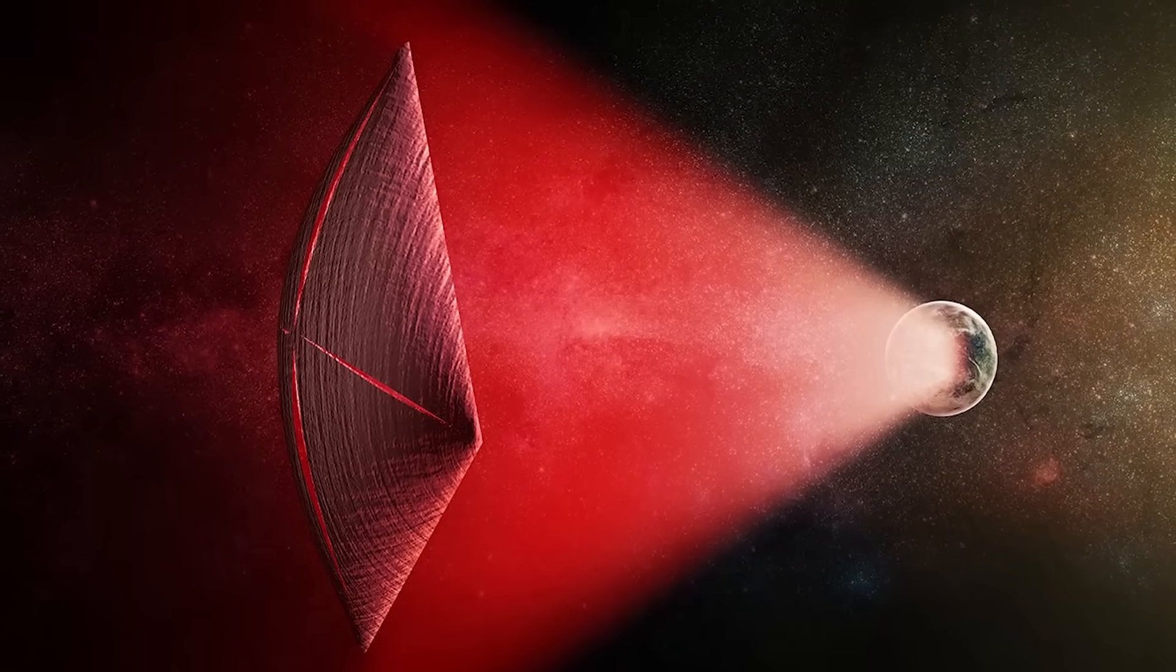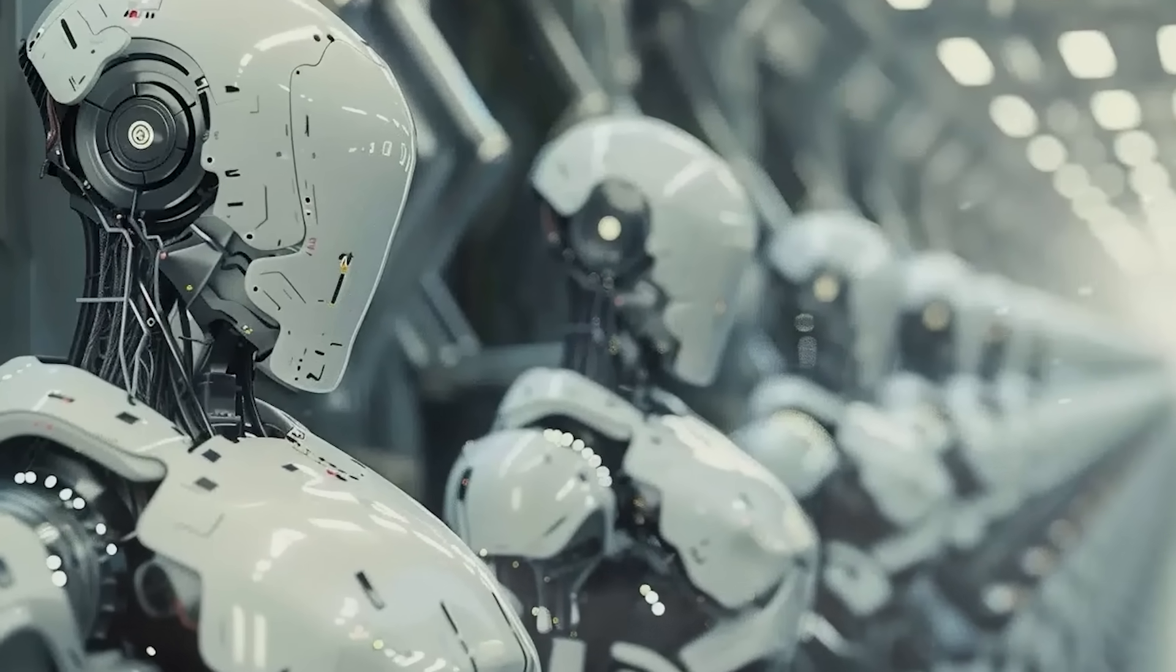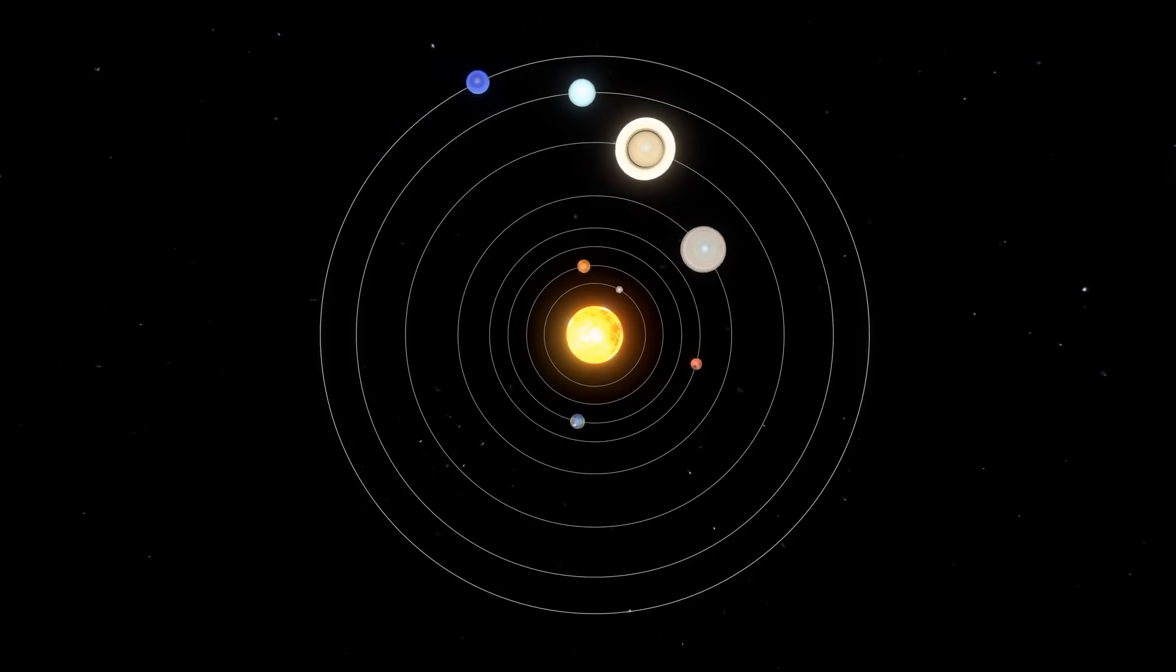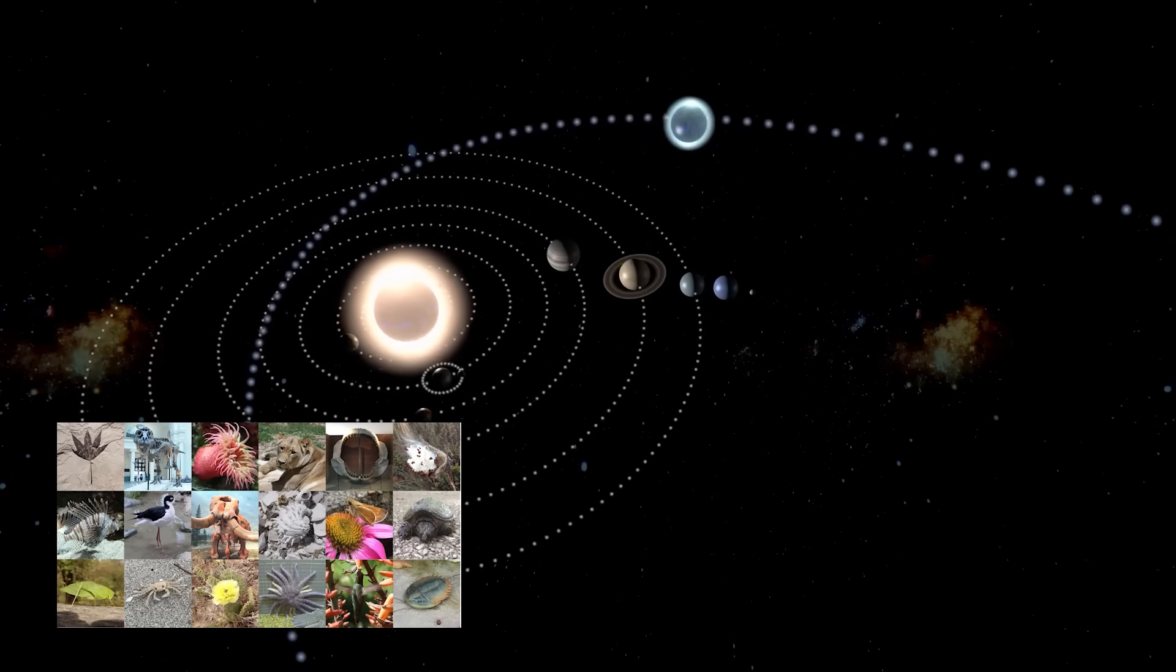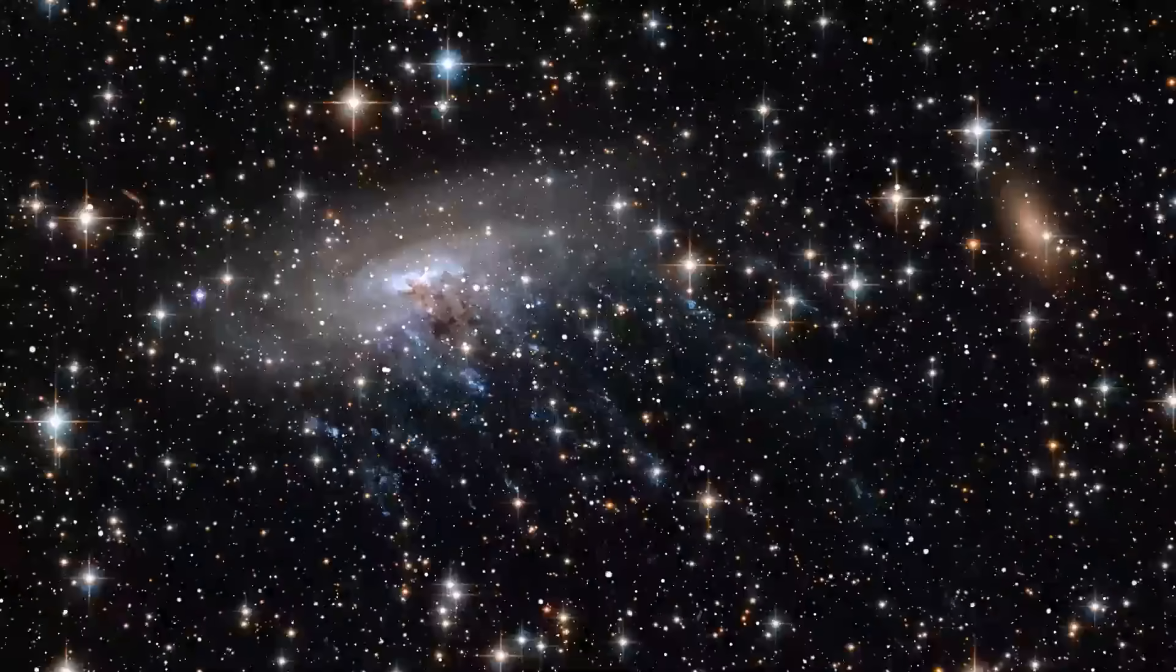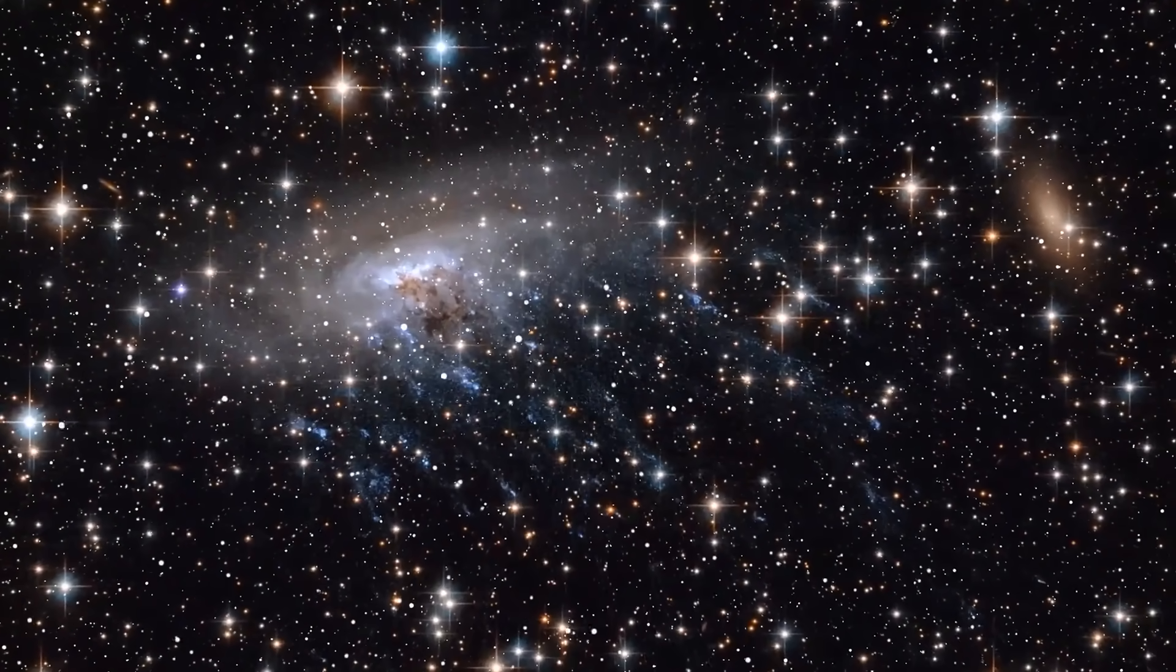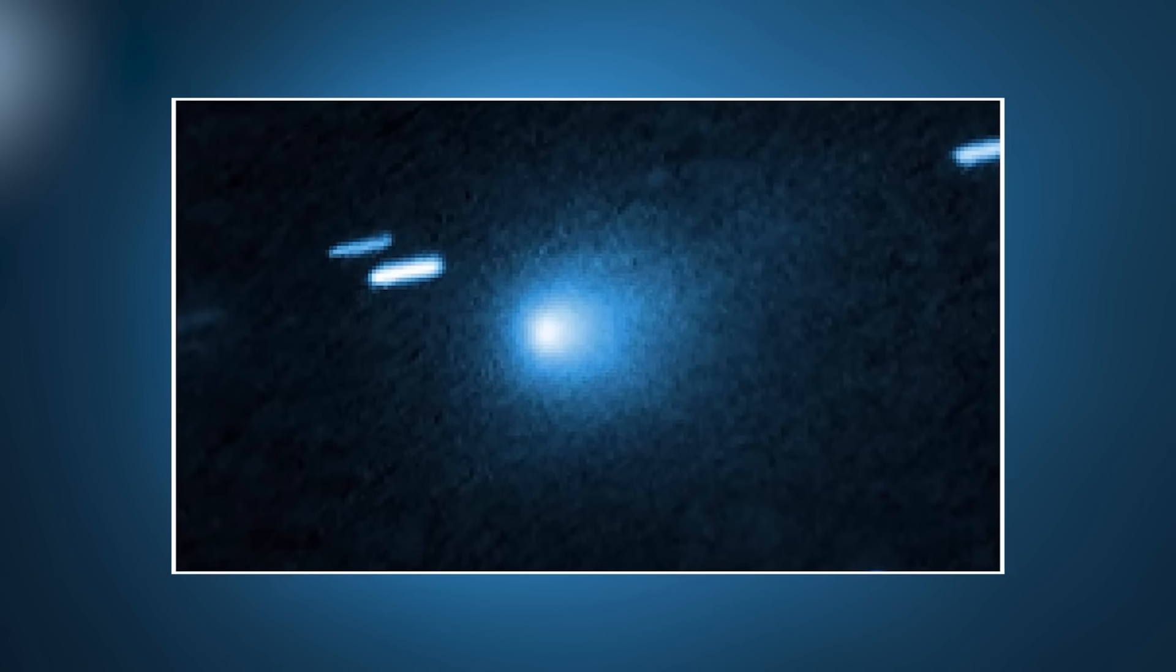On the flip side, what if we are the target? There's a long-standing scientific concept called a Bracewell Probe. The idea is that an advanced civilization wouldn't waste time sending living beings across the void. Instead, they'd send a hyper-intelligent, autonomous robot and have it wait. It would find a promising solar system, enter a dormant state, and lurk for millions of years. Its only job would be to wait for the dominant species on one of those planets to become technologically advanced enough to be noticed. To start broadcasting radio waves, for instance. And once it detected those signals, it would wake up. It would move from its hiding place to initiate first contact. The acceleration of 3i Atlas could be that awakening. An ancient watcher finally making its move now that we've advertised our existence to the cosmos.